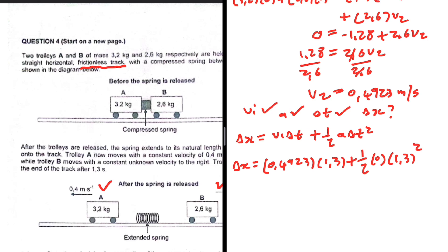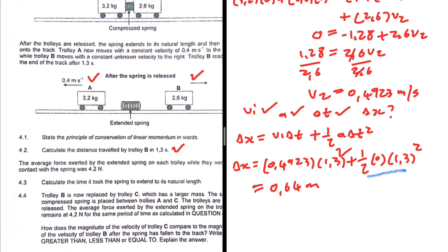Delta t, 1.3, plus a half—acceleration is zero, like we've seen—the time is still 1.3, and we square that. This gives us zero, obviously, so we can just concentrate on this. So delta x = 0.4923 multiply by 1.3. Okay, I just substituted the wrong thing in my calculator. Multiply by 1.3, so let's take a look.